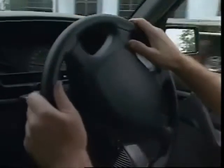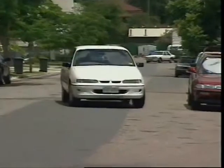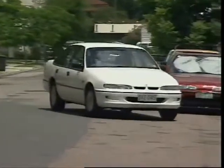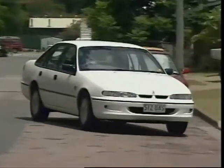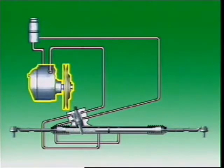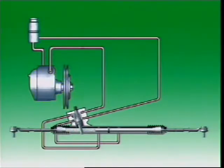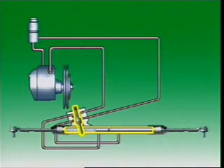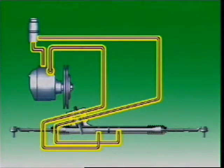Assistance is provided as soon as the steering wheel is rotated in either direction. And it's designed so that even if system failure occurs, the vehicle can still be steered. An engine driven hydraulic pump delivers hydraulic fluid to the power unit at the steering box or rack and pinion through connecting hoses and pipes.